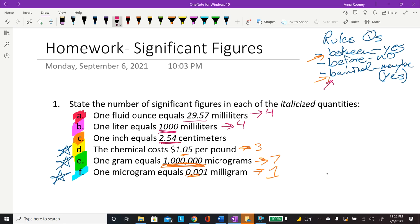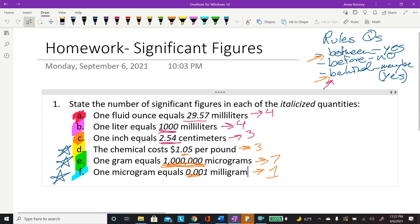And then this last one, 1 equals 2.54 centimeters. That is a significant figure. So because there's no zeros, you don't have really that problem. So that is how you solve that one.